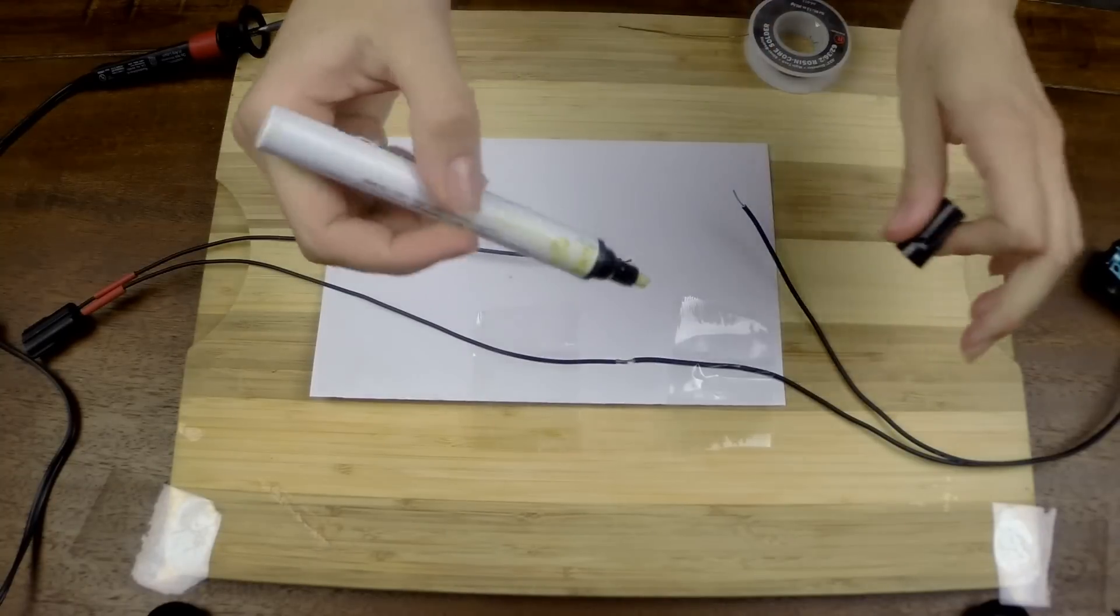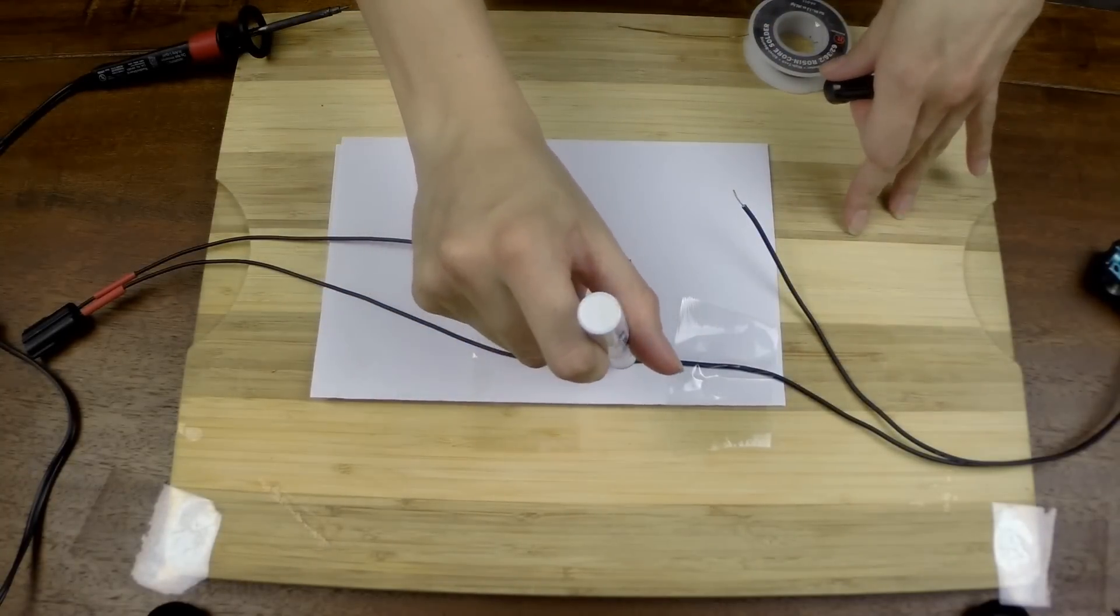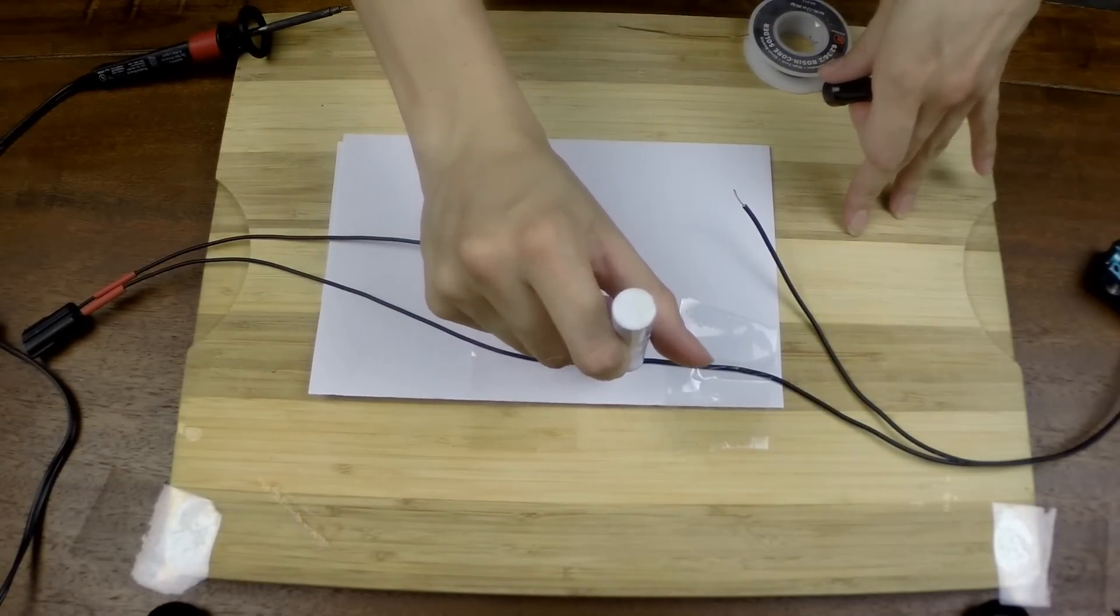Once the wires are in line I'm applying a small dab of flux followed by solder to bind the wires together.